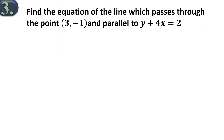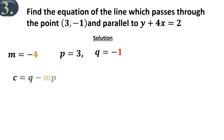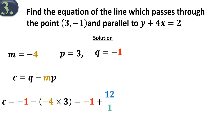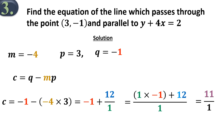Example 3: Find the equation of the line which passes through the point (3, -1) and parallel to y plus 4x equals 2. The solution. From the question, the gradient m equals negative 4, the x-coordinate p equals 3, and the y-coordinate q equals negative 1. Using the formula c equals q minus mp: c equals negative 1 minus negative 4 times 3, which will be simplified as shown. c will be equal to the numerator, which is 11. So our required equation is y plus 4x equals 11.